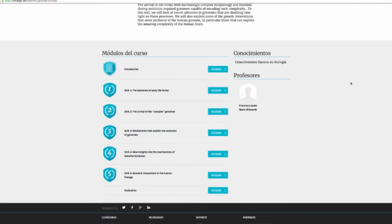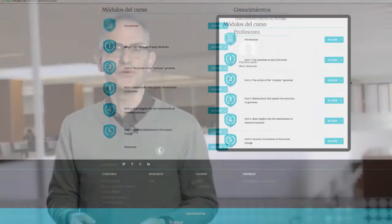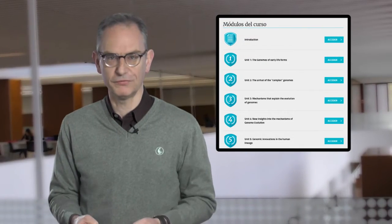There are five units. The genomes of early life forms is an introduction to the origin of the first forms of cellular life on Earth.